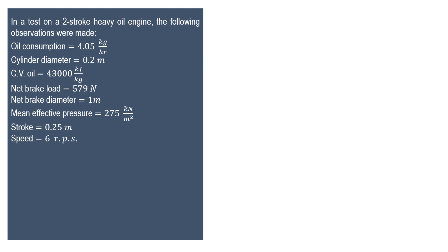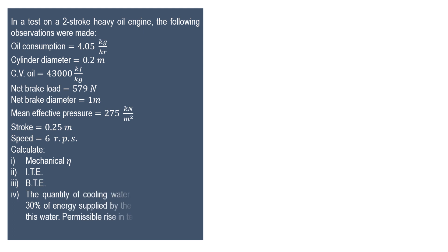Speed is given as 6 rps. We have to calculate mechanical efficiency, indicated thermal efficiency, brake thermal efficiency, and the quantity of cooling water required per minute if 30 percent of energy supplied by the fuel is absorbed by that water. The permissible rise in temperature of water is given as 25 degrees centigrade.